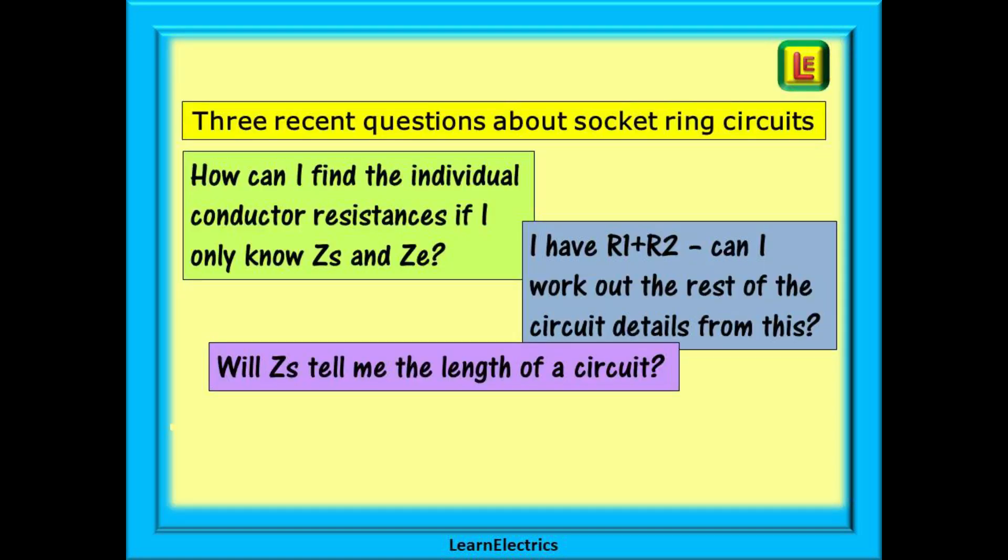almost every socket ring circuit is 2.5 twin and earth with a 1.5 CPC. How can I find the individual conductor resistances if I only know Zs and Ze?